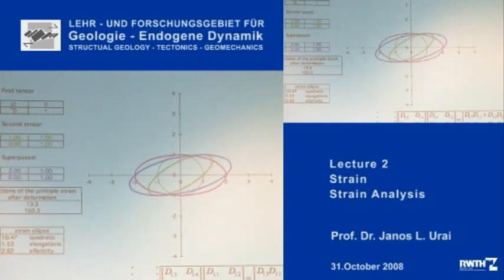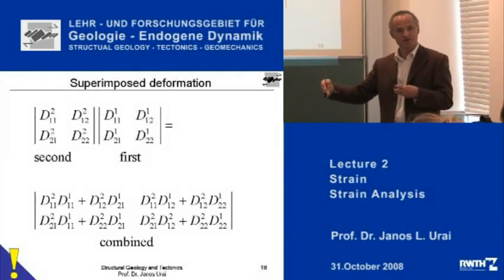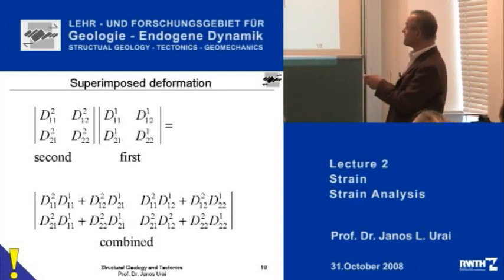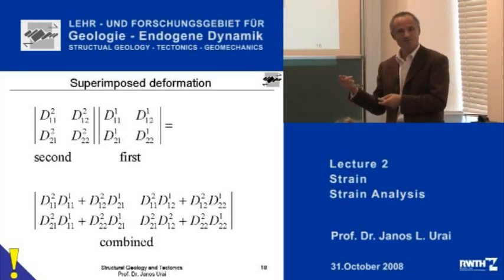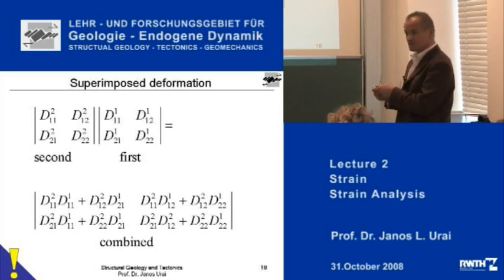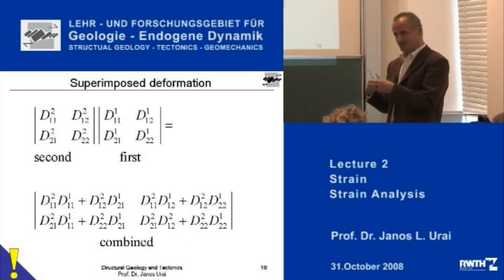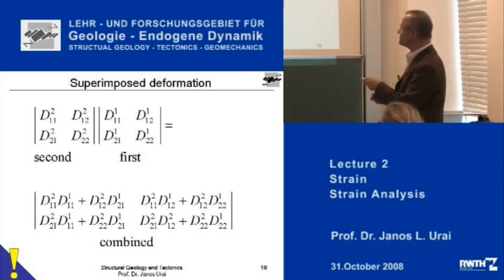And if you understand these, you can work with these deformation tensors, deformation matrices. To summarize: superposed deformation — one deformation after the other — is a matrix multiplication. You take the first matrix and with that you multiply the second. The order is exactly the opposite of what you would intuit. And if you write it out, you can derive algebraically that there is a new matrix which gives you in one step the operation of the two.